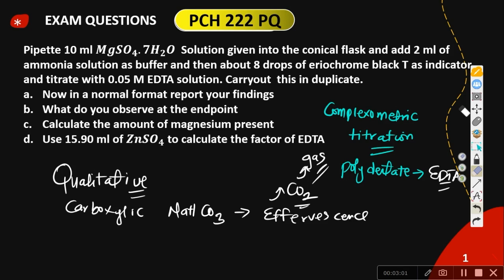Since you need the solution to this practical, let me profile it now. First, you carry out the titration and there will be a color change observed at the endpoint. Your observation at the endpoint is your color change. The specific color change you are going to see depends on the indicator Eriochrome Black T used.